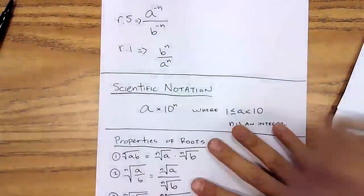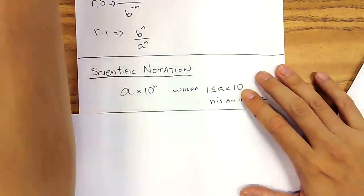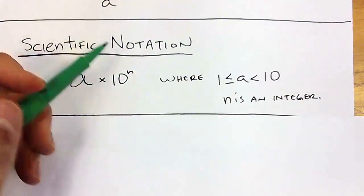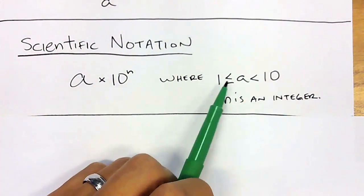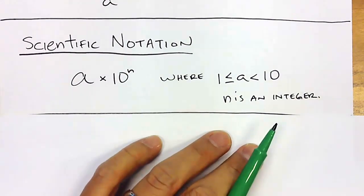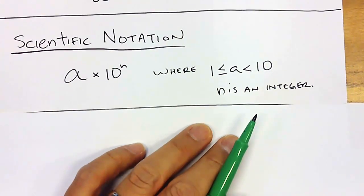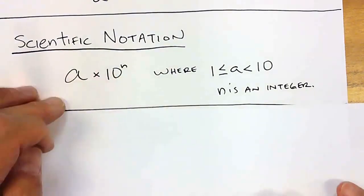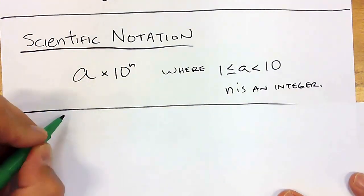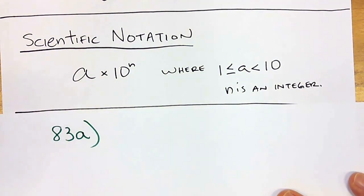The next topic is scientific notation, where scientific notation is a times 10 to the n power, where your a value is between 1 and 10 but cannot equal 10, and n is an integer — it could be negative, but it has to be a whole number. Let me show you an example — this is number 83a from the book.